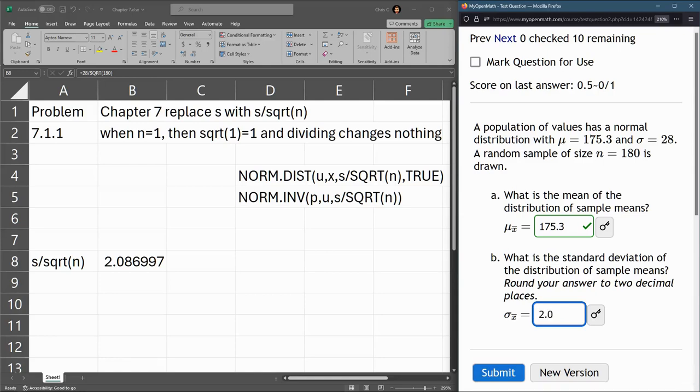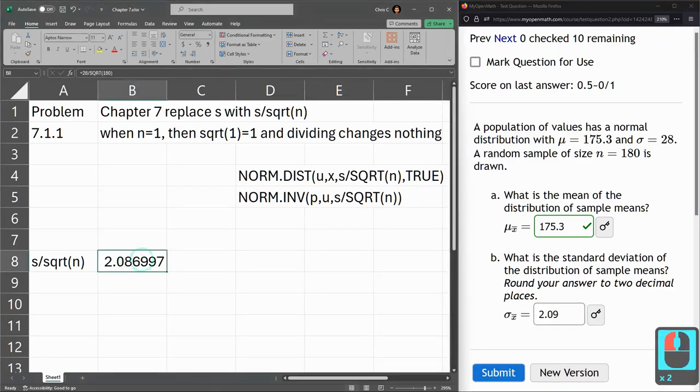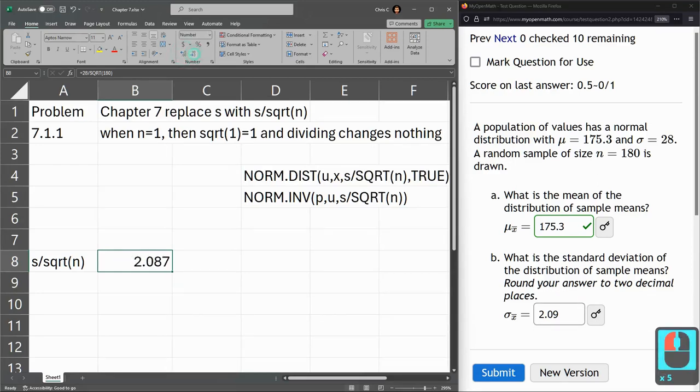This says two decimal places, so I need to round this up. And again, if you want to use Excel's built-in rounding, go for it. You'll see it's 2.09.